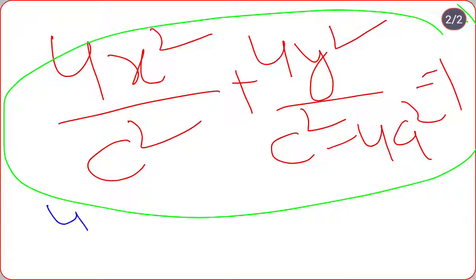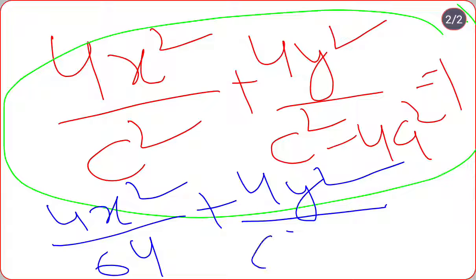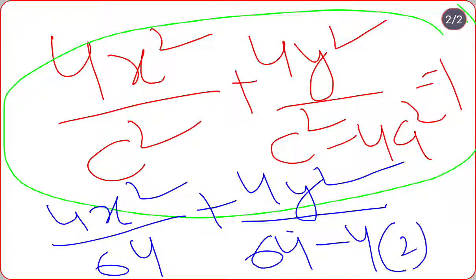My required answer is: 4x² / 64 + 4y² / (64 - 4×2²) = 1. Here c is 8, so c² is 64, and a is 2. Just simplify it and you will get the required answer.